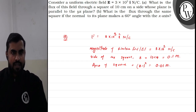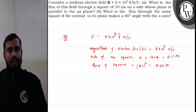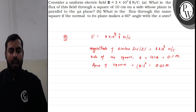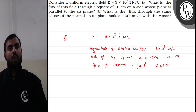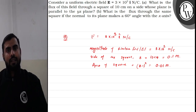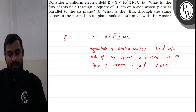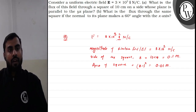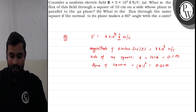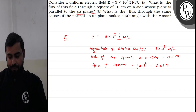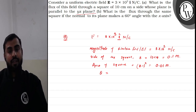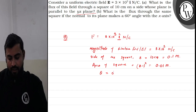As mentioned in the question, the plane of the square is parallel to the YZ plane. This means the angle between the unit vector normal to the plane and the electric field is 0 degrees. The electric field is in i-cap direction and the area vector will also be in the i-cap direction, because this square is parallel to the YZ plane. So theta, the angle between the electric field and area vector, will be 0 degrees.